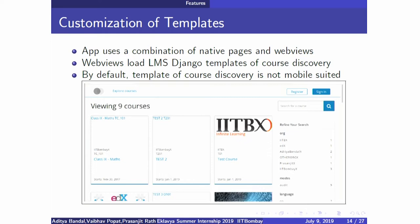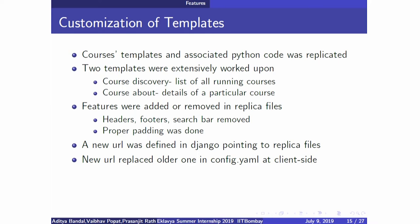For template customization: the templates are already present on the server side and accessible through a web browser. Android does not have separate code to show the list of courses directly; instead it takes the web page and displays it in Android's native web view. The problem is that this web view contains unnecessary features like a header, footer, and search bar that we do not need in the Android app, since the Android app has its own search feature.